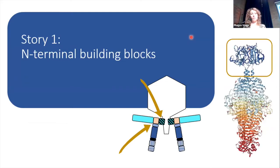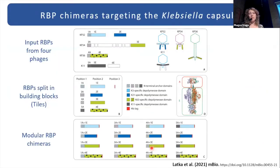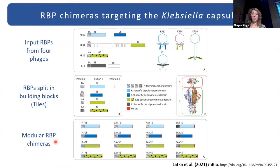Story one is about the N-terminal building blocks — the ANCHOR building block of RBP1 and the conserved N-terminal building block of RBP number two. We had four phages in our collection: three podophages and one siphophage. We took their RBPs, divided them into building blocks — ANCHOR and enzymatic part — and then played Lego with them, assembling them in all possible variants.